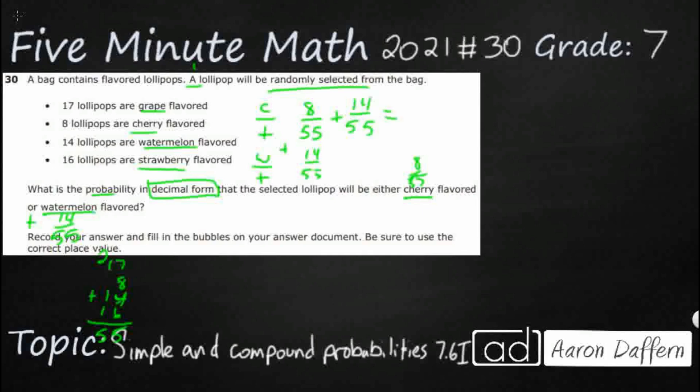Alright, so 8 and 14 is 22. We don't add the denominators. So there we go. So our combined probability is 22 out of 55. Holy cow. That is not something that you can put into a griddable response. We need to turn this into a decimal.